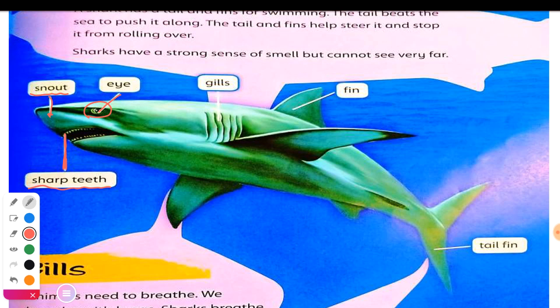Every fish has its gills, even a normal fish. But sharks — they have this kind of gills where they breathe. This part — these are called gills.